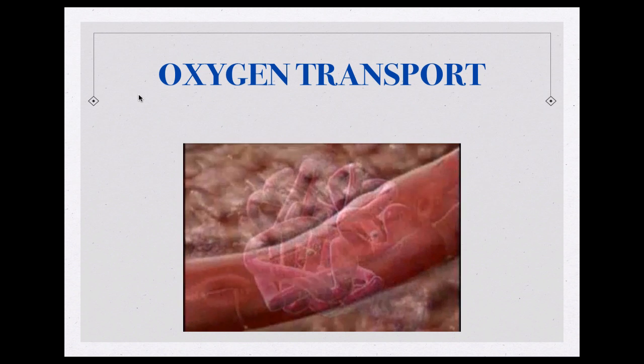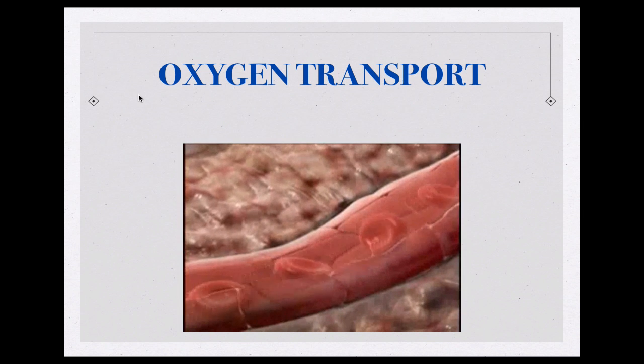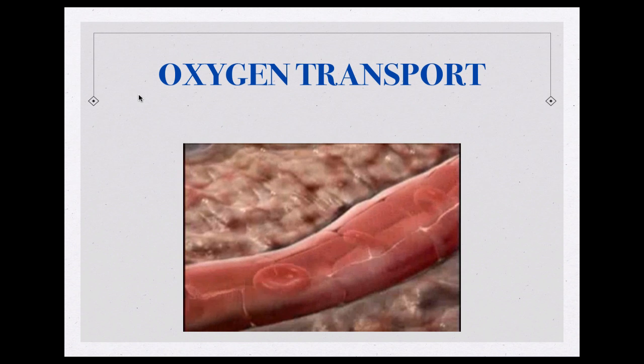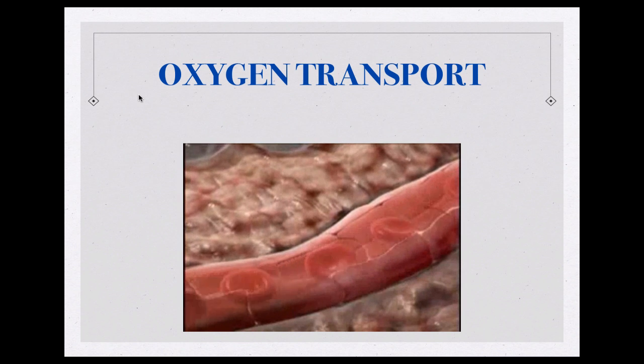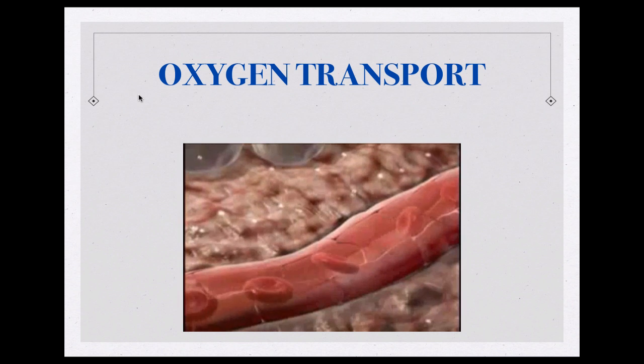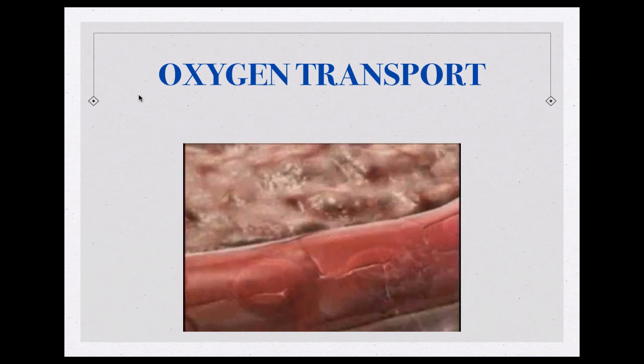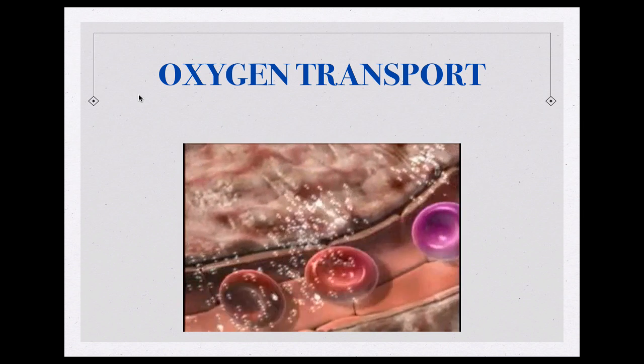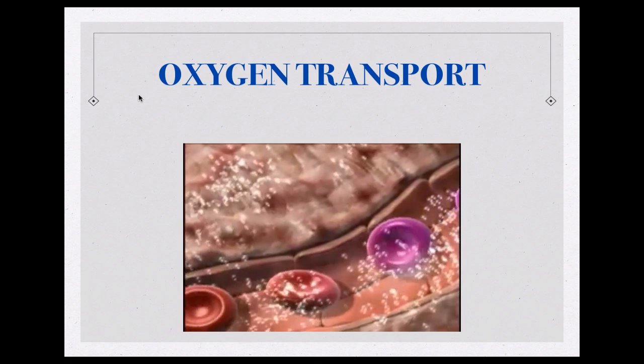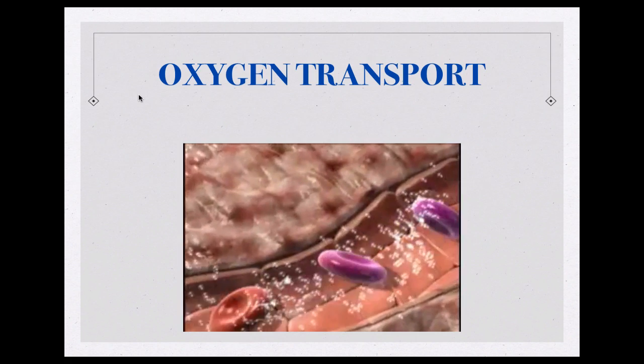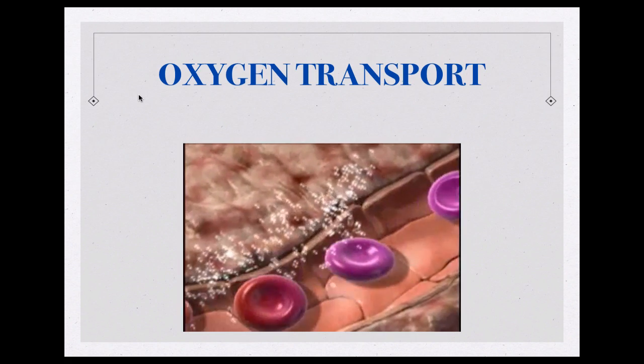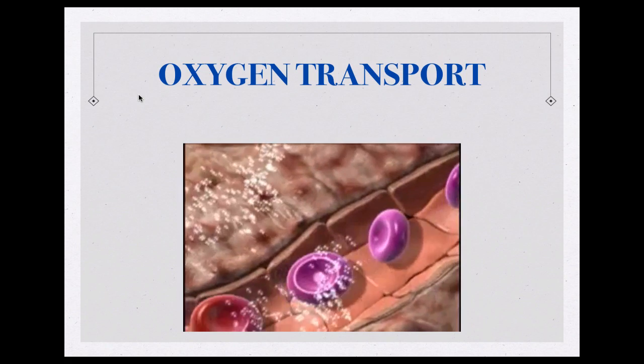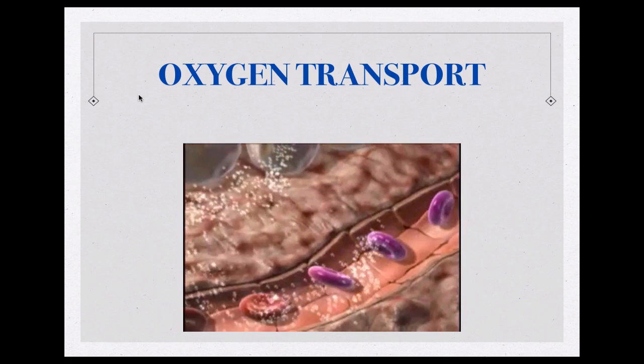Hemoglobin gives up its oxygen as red cells travel through capillaries in tissues where there is a low content or partial pressure of oxygen. The partial pressure of oxygen represents the level of dissolved oxygen in plasma. As oxygen is released and again is carried in solution, the partial pressure of oxygen in the capillaries becomes greater than the partial pressure of oxygen in the surrounding tissues. This causes oxygen to move out of the capillaries into the tissues and finally reach the cells.